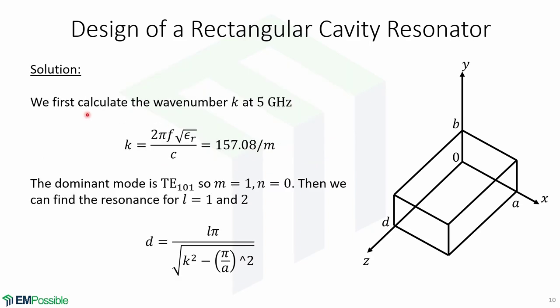We first calculate the wavenumber k at 5 GHz, which is equal to 2πf times the square root of εr over c, and it's equal to this. In a rectangular cavity with the dimensions provided, the dominant mode is the TE101 mode, so m equals 1 and n equals 0. Then we can find the resonance for l equals 1 and 2, and is given by this.